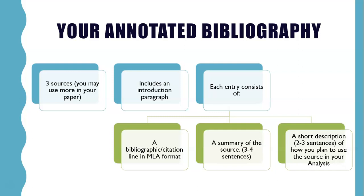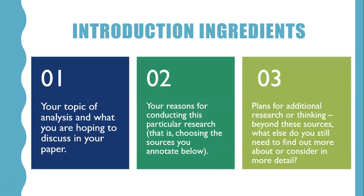So the introduction of your annotated bib is just a short paragraph. Tell me the topic of your analysis, what you're hoping to discuss in your paper. You might not have a solid thesis statement yet — that's okay. Tell me where you're at right now when it comes to the topic of your paper. Talk a little bit about why you found these sources — basically, what were you hoping to find in your research, and what was the reason for choosing these sources right now?